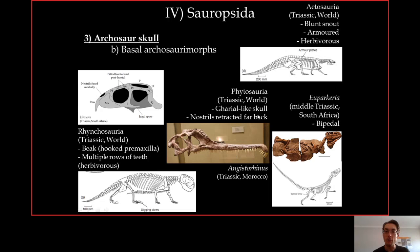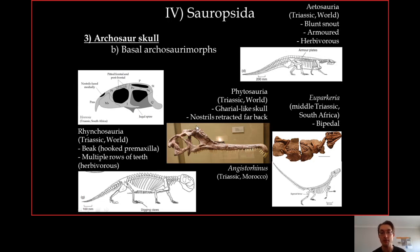The Phytosauria is another group of strictly Triassic archosaurs. They look superficially like gharials — very long, thin-snouted, crocodile-like skulls. The main difference from the gharial is that in Phytosauria, the nostrils are fully retracted on top of the skull — there's a shallow depression on top — whereas the gharial has its nostrils near the tip of the snout. That's the main difference, and Phytosauria are strictly Triassic.